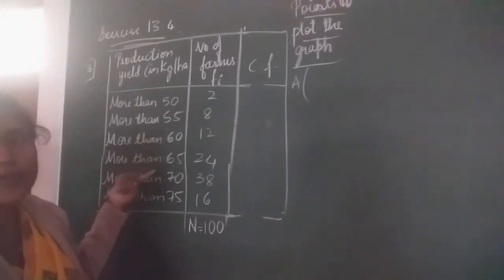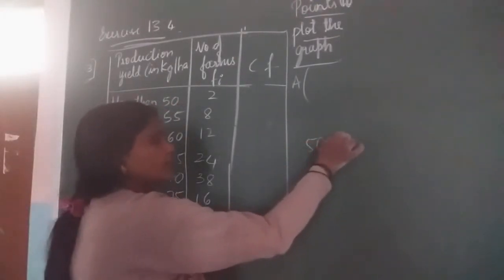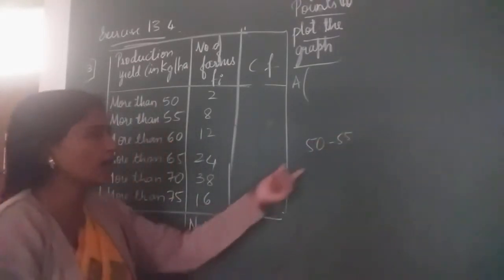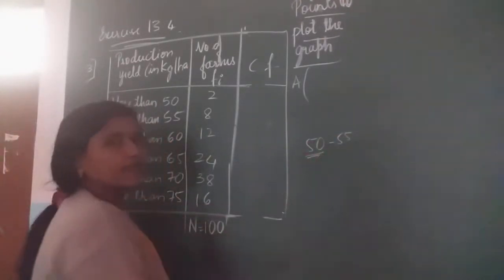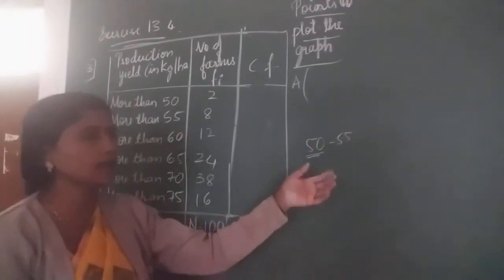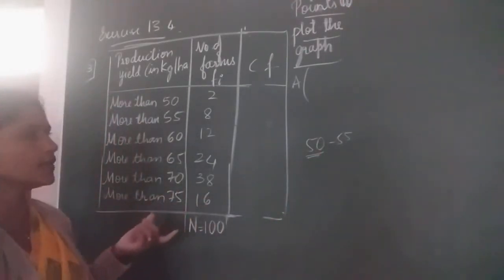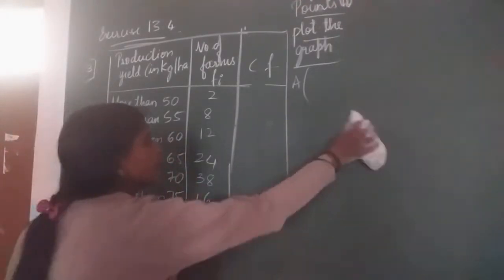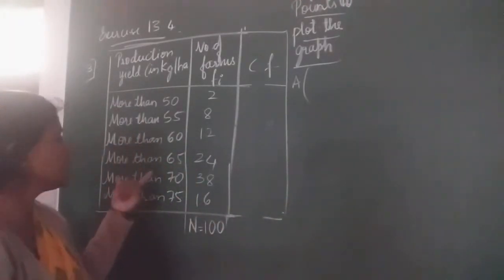They have given the class intervals, so you have to change that into more than type. We have to take the lower limit here, that is more than 50. They have given the class interval as 50 to 55, so we have to take more than 50. If it was less than type, then you have to take less than 55. Now it is more than type, so you have to take more than 50. I have converted this class interval into more than type.